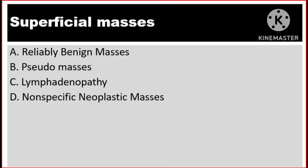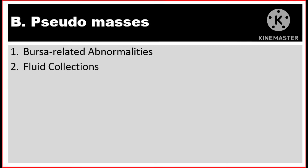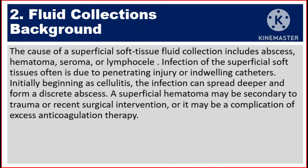Previously we talked about A, benign masses. Then we will continue our video about B, pseudomasses, which include number 1, bursa-related abnormalities, and number 2, fluid collections.